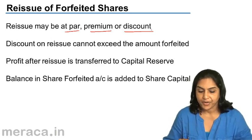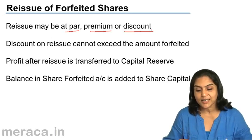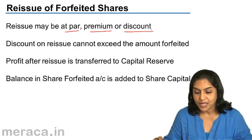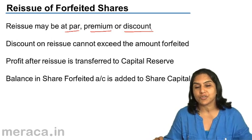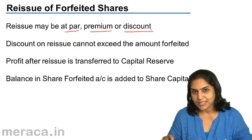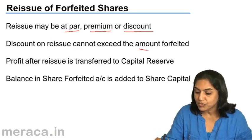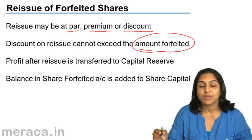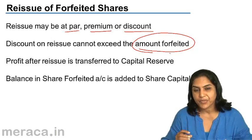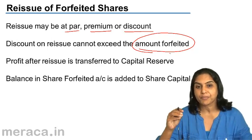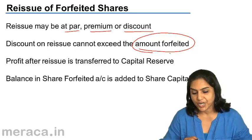However, if forfeited shares are being reissued at a discount, the maximum amount of discount is the amount which was forfeited — that is, the amount which was received at the time of forfeiture from the previous shareholder.